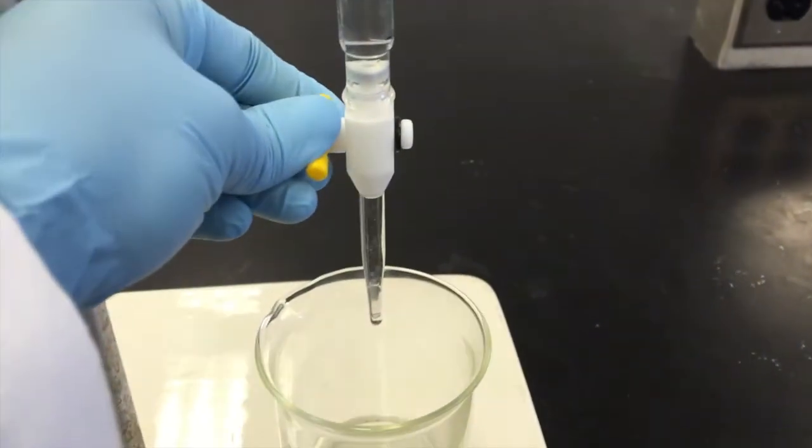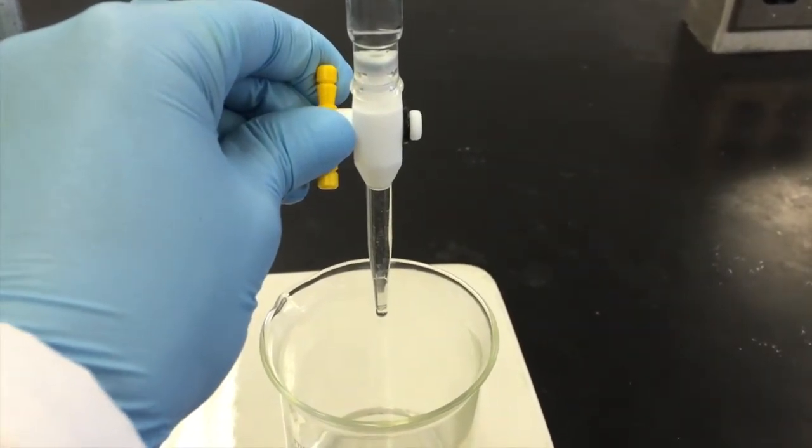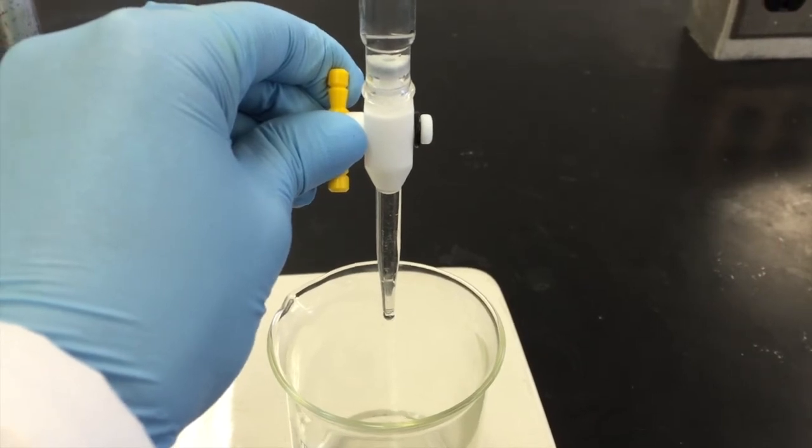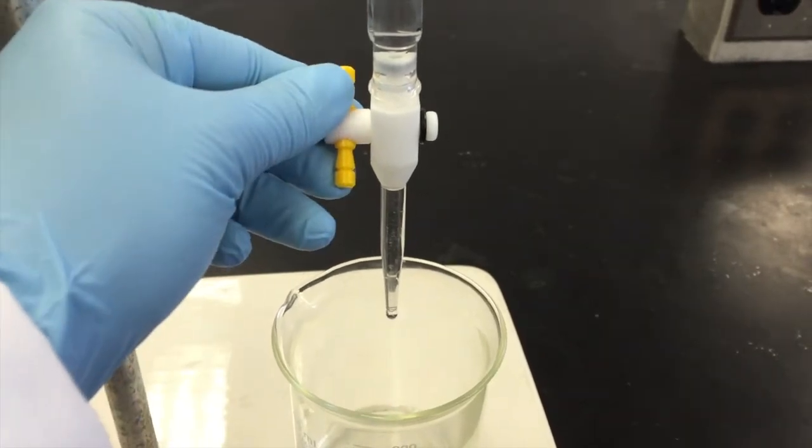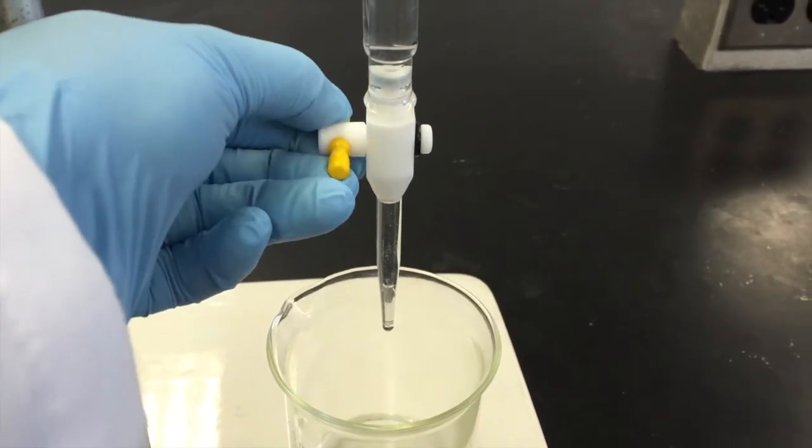If the knob is turned so that the burette is only partially open, the solution will come out in a dropwise manner. Expel enough liquid into the waste beaker so that the sodium hydroxide solution comes down to the zero milliliters mark.